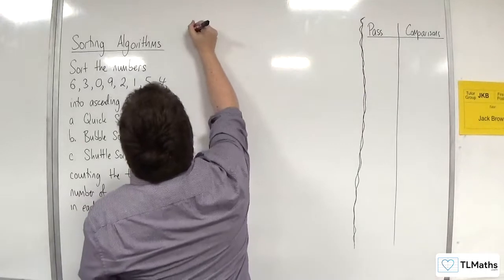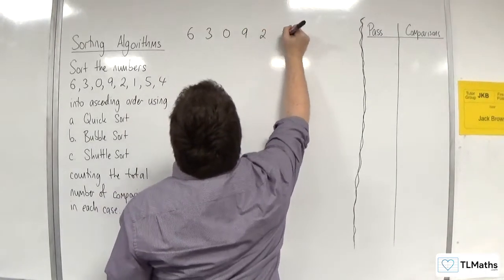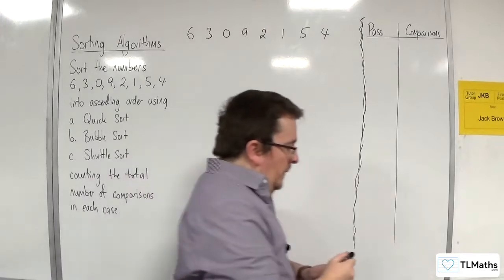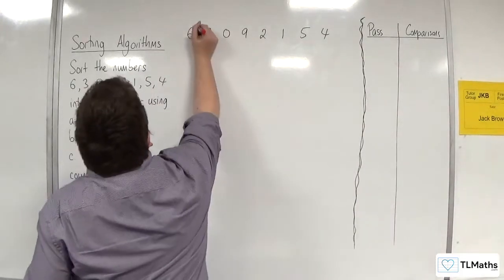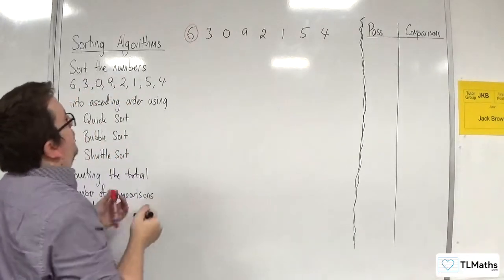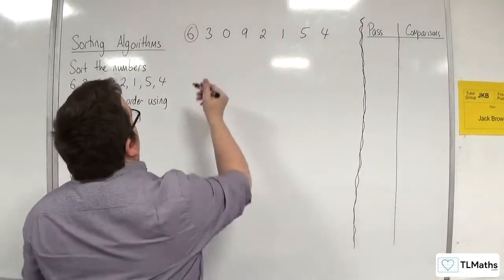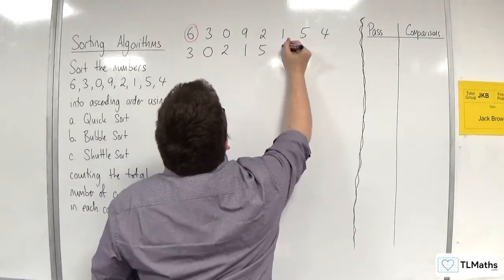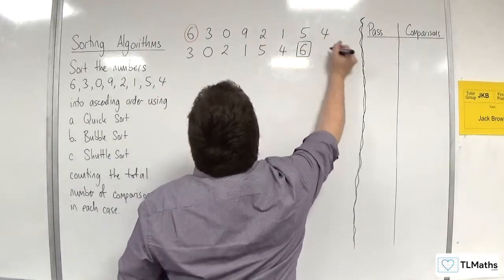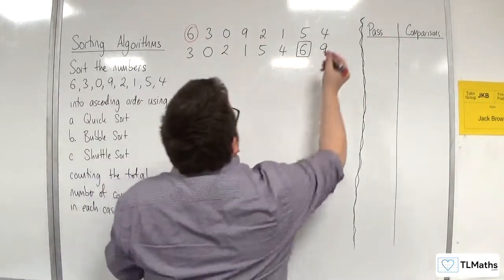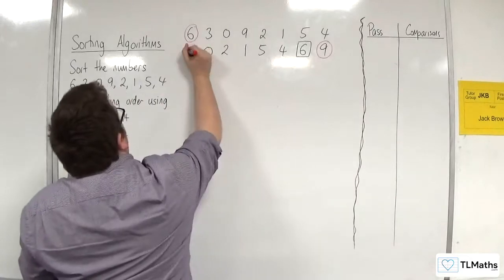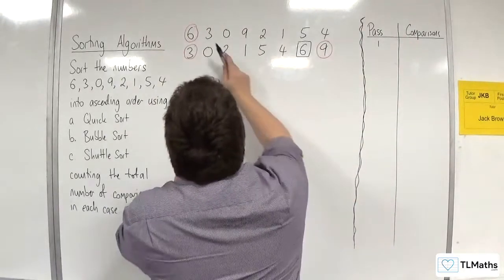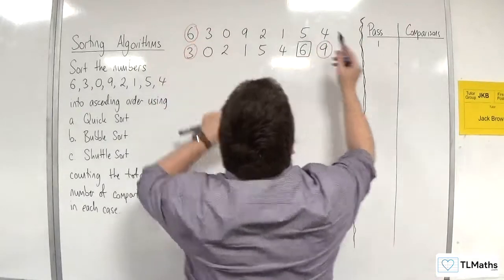So let's start off with the list: 6, 3, 0, 9, 2, 1, 5, 4. I'm going to start off with the quicksort algorithm. So 6 is going to be the pivot to start with. All the numbers that are less than 6 go to the left: 3, 0, 2, 1, 5, and 4. Then we've got the 6, which is now boxed, and we've got the 9. I'm circling my new pivots. In that first pass, I made 7 comparisons.